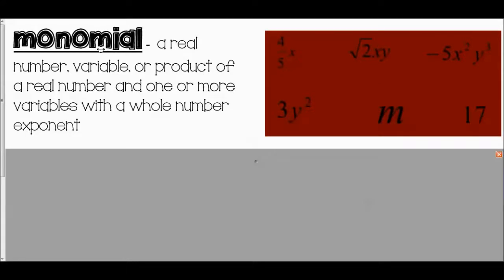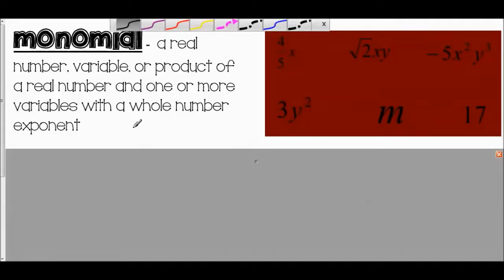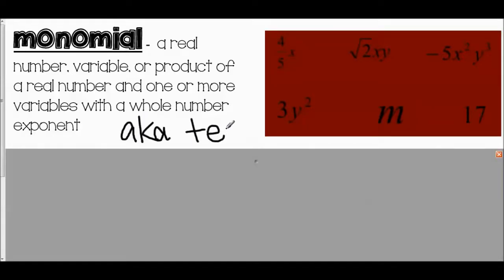First let's talk about a monomial. It is a real number, a variable, or product of a real number and one or more variables with a whole number exponent. It's basically a term. Here are some examples: four-fifths x, the square root of two times xy, negative five x squared y to the third, three x squared m, and 17. Those are all monomials — also known as a term. It's like the words that build the phrase or the sentence.